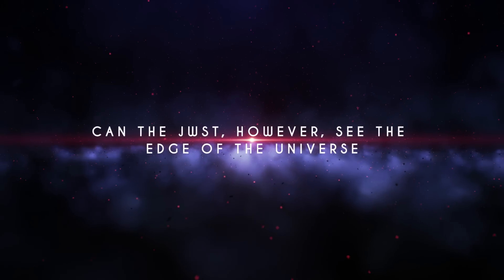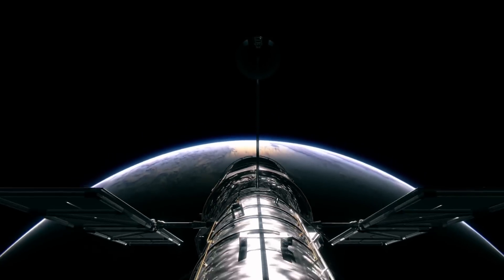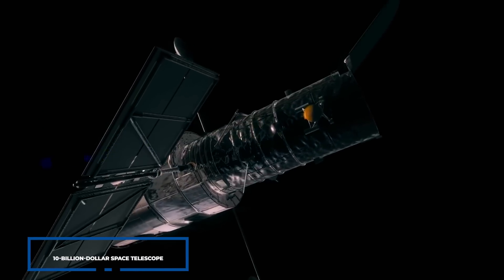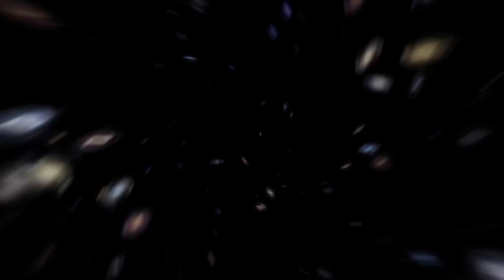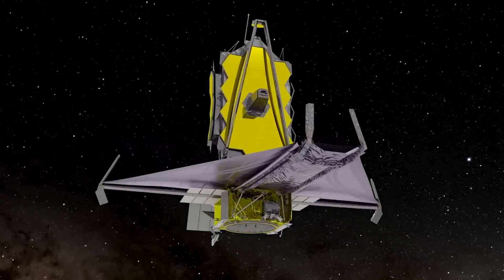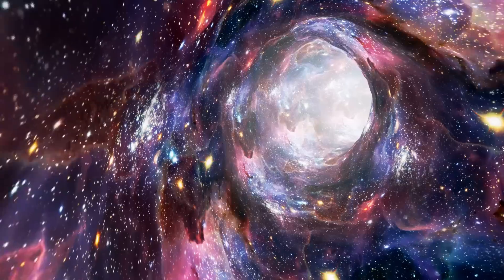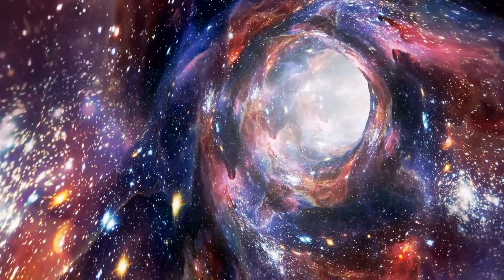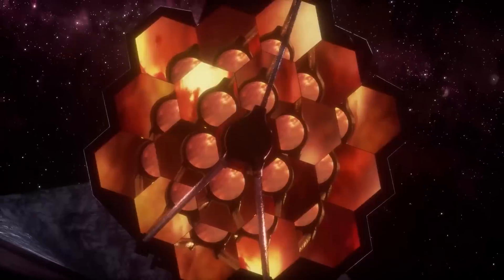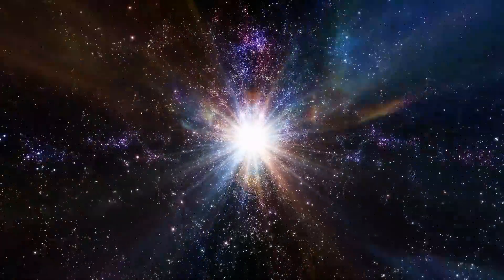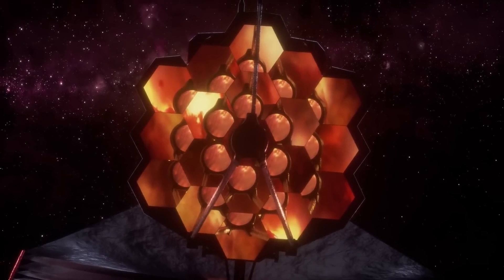Can the JWST, however, see the edge of the universe? When considering the development and deployment of a $10 billion space telescope, it is natural to wonder if it can see that far. To begin with, the JWST is 100 times more powerful than the iconic Hubble Space Telescope. It can collect very faint infrared light from the universe's very first galaxies. It will also be able to explore planets around other stars in our galaxy and analyze their atmospheres for signs of life.